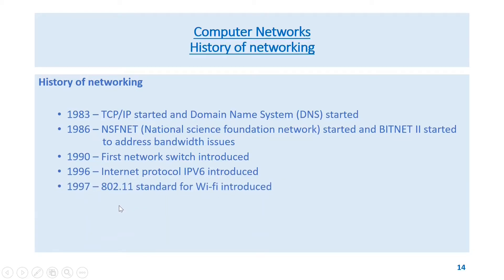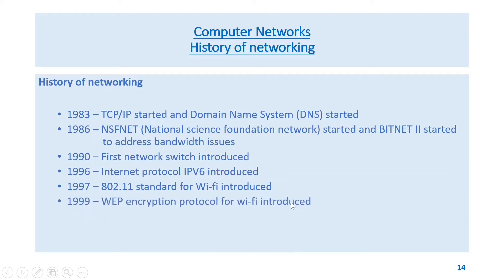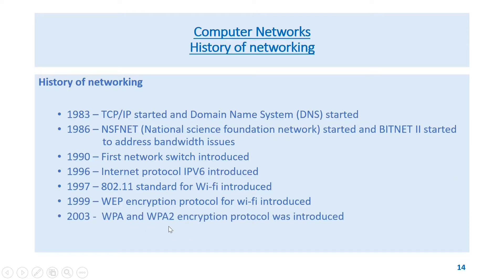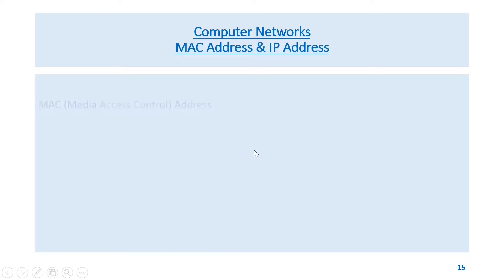In 1990, the first network switch was introduced. In 1996, Internet Protocol IPv6 was introduced. In 1997, the 802.11 standard for Wi-Fi was introduced. In 1999, WEP encryption protocol for Wi-Fi was introduced. In 2003, WPA and WPA2 encryption protocols were introduced. In 2018, WPA3 encryption was introduced.